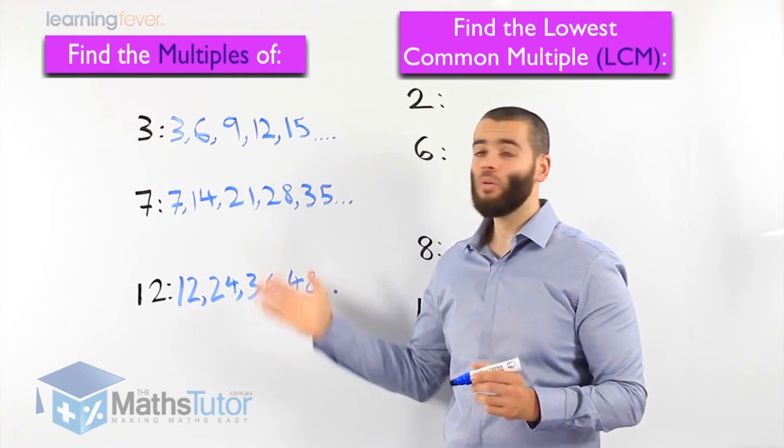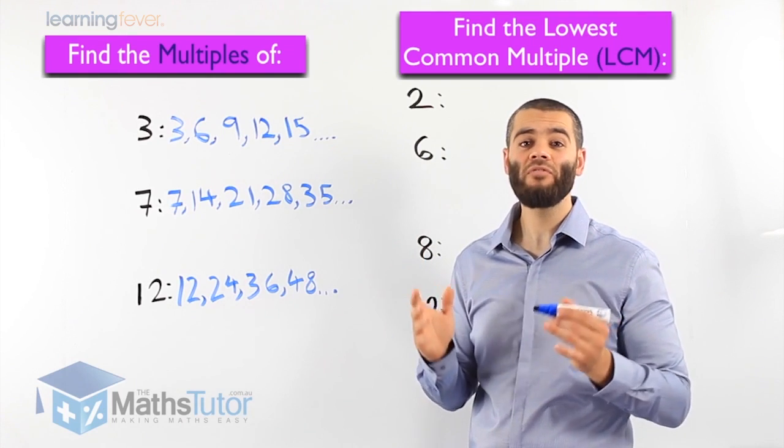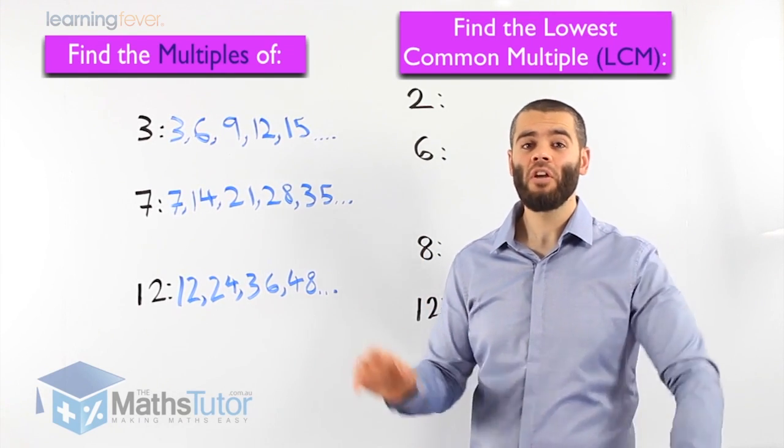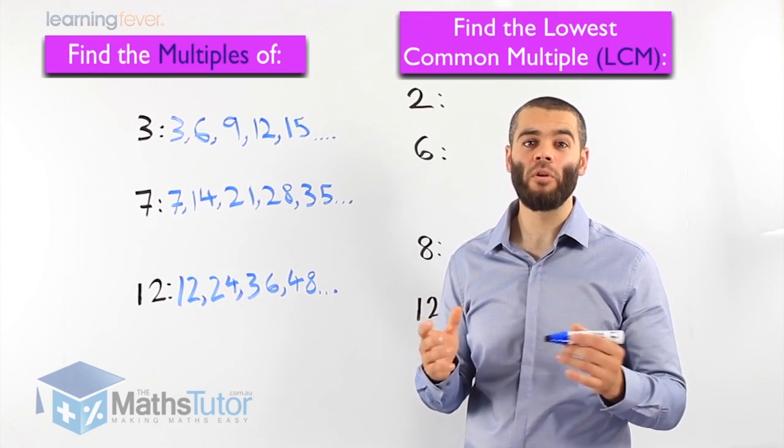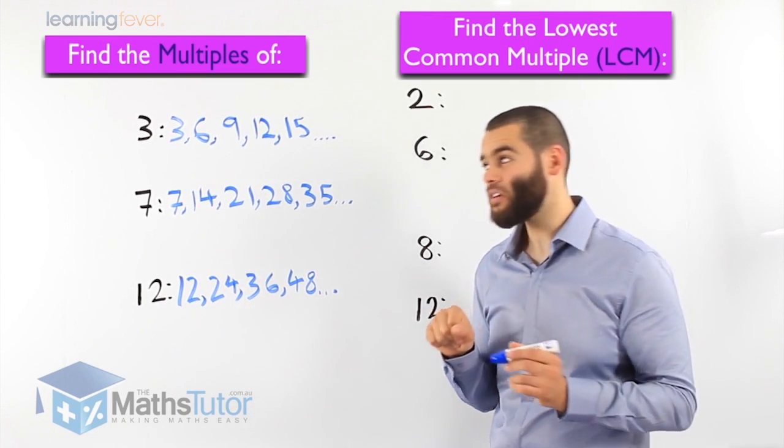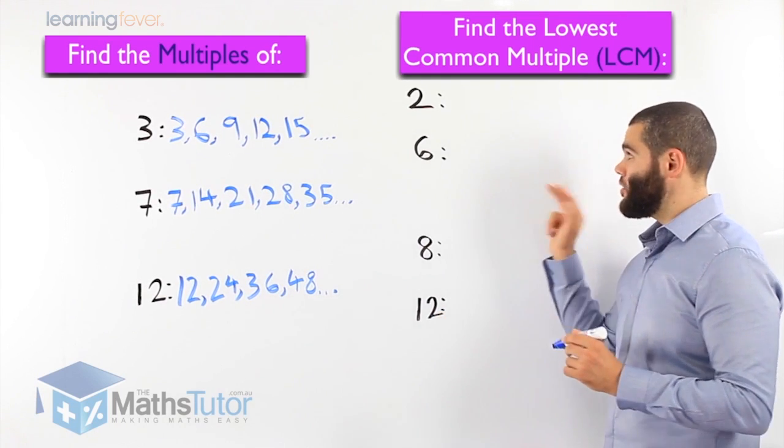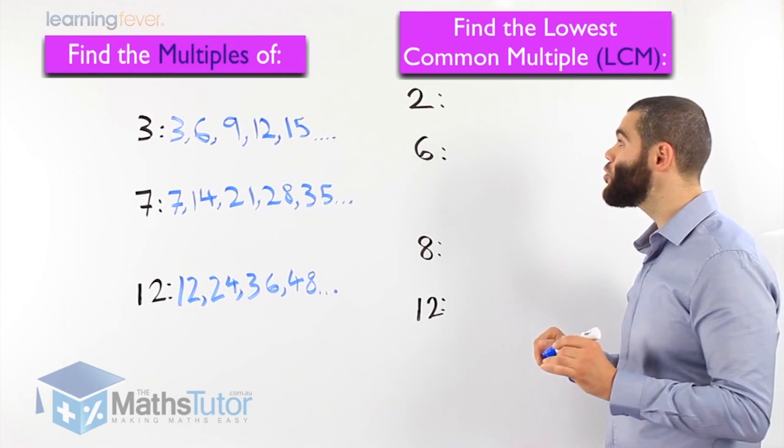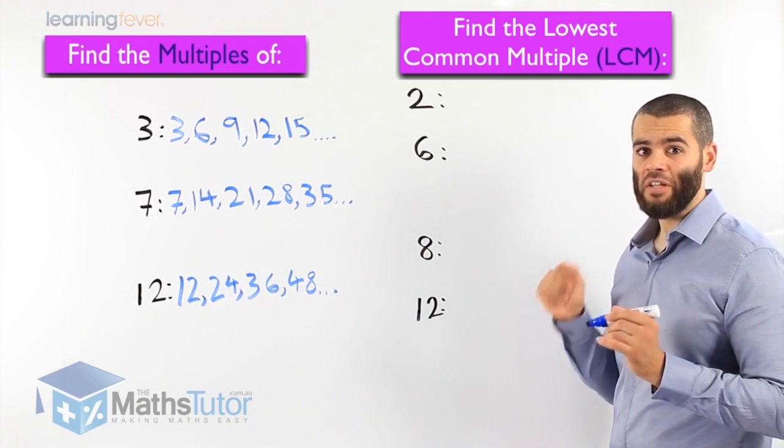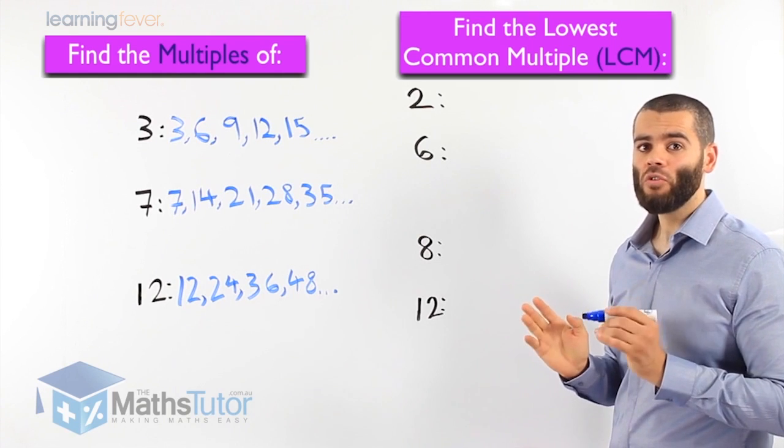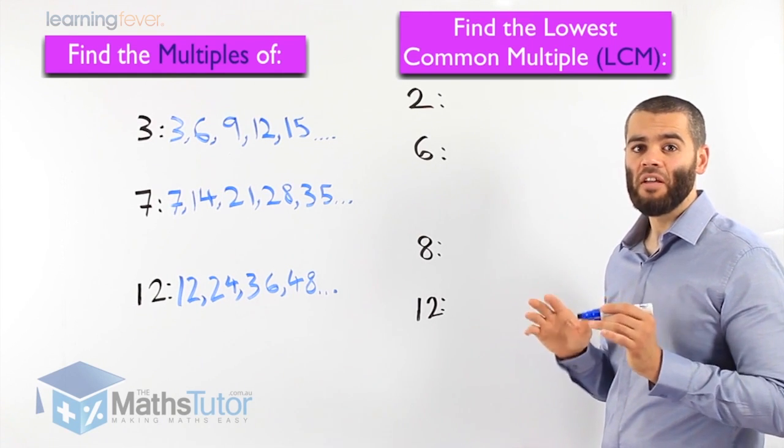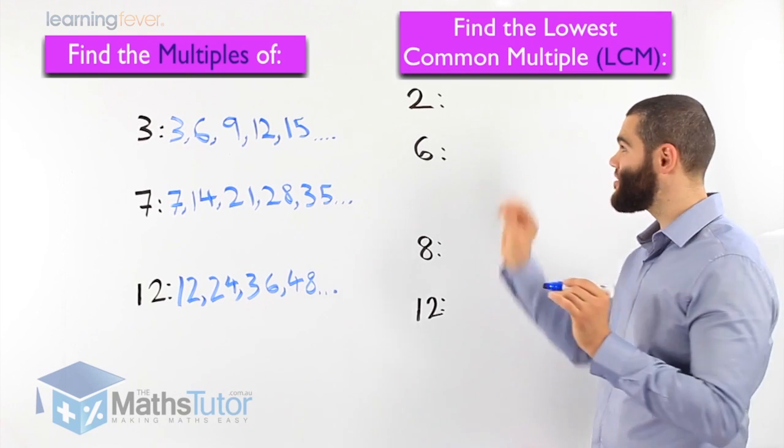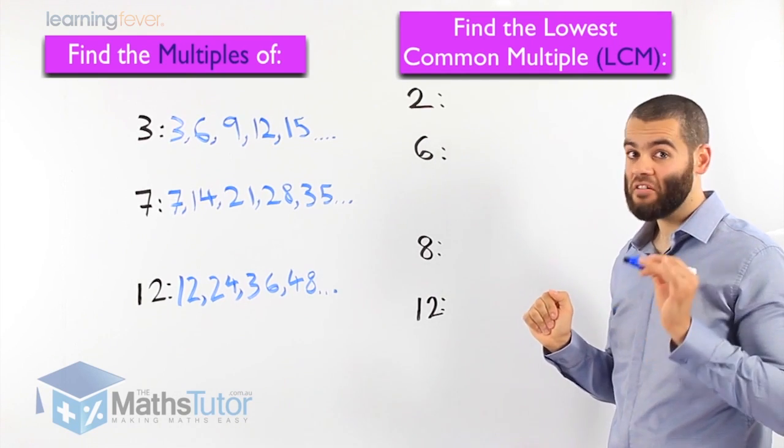So now that we know what multiples are, we can actually find the lowest common multiple between two numbers. At times, you're going to be asked to find the lowest common multiple. Let us see how this actually works. This question says, find the lowest common multiple of 2 and 6. So we need to list the multiples of 2, we need to list the multiples of 6, and find the lowest common one. Meaning the lowest multiple that is available in 2 but is also available in 6.